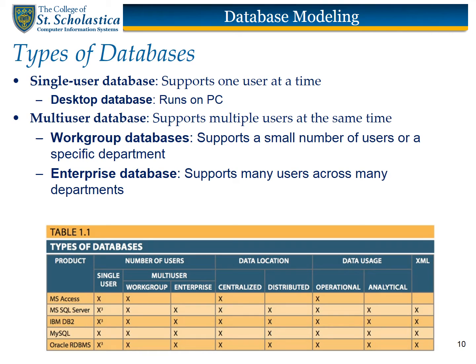A DBMS can be used to build many different types of databases, each storing a particular collection of data for a specific purpose. The number of users determines whether the database is classified as single-user or multi-user. A single-user database supports only one user at a time, while a desktop database runs on a personal computer. Multi-user databases support multiple users simultaneously, and are further categorized as workgroup databases — which support a small number of users or a specific department — or enterprise databases, which support many users across many departments.